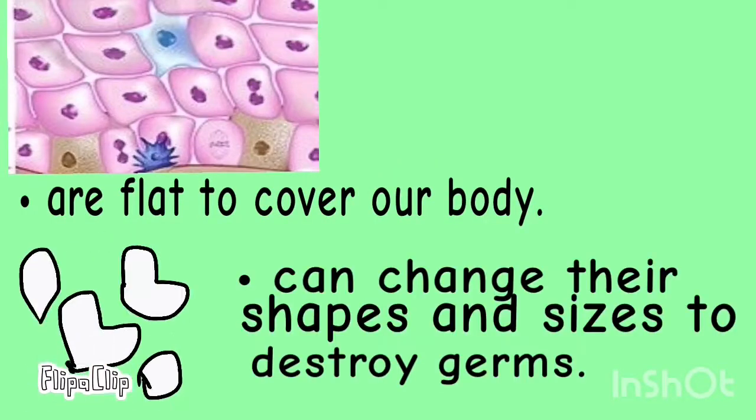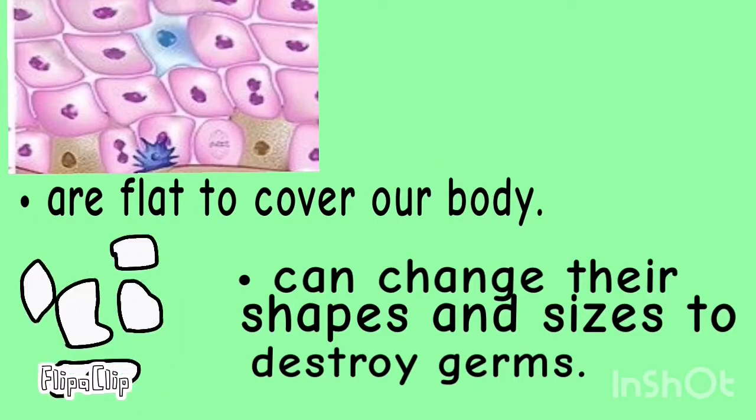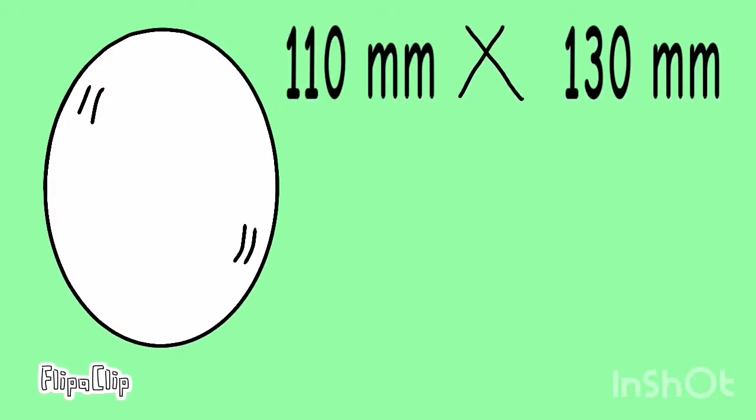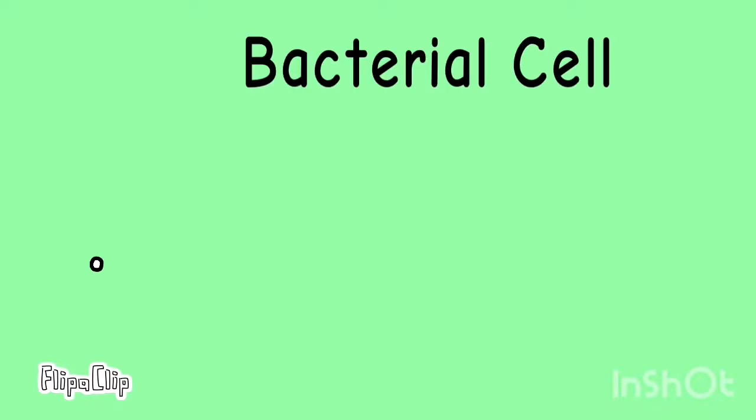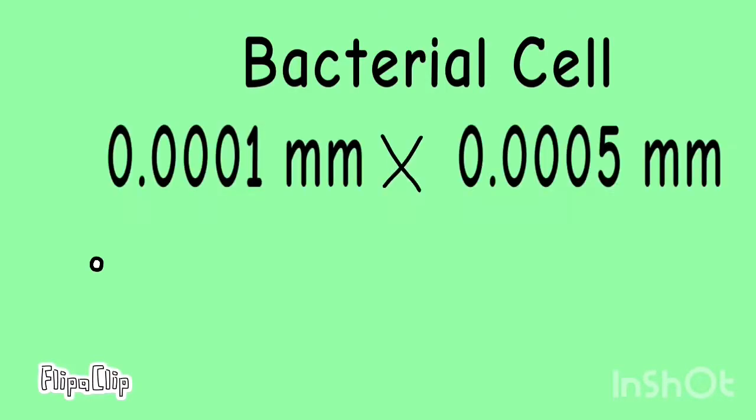An ostrich egg measuring 110 millimeter by 130 millimeter is the largest single cell. The smallest cell is a bacterial cell that measures 0.0001 millimeter by 0.0005 millimeter.